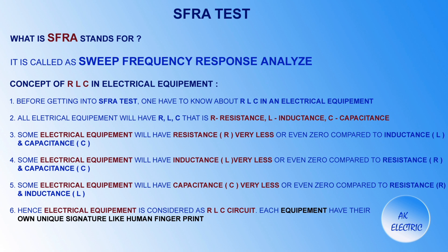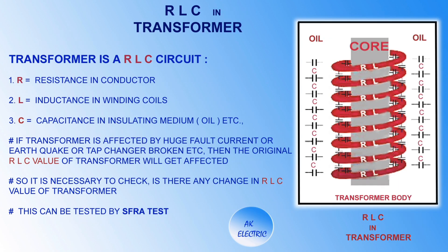Each equipment has its own unique signature, like a human fingerprint. Inside a transformer body, one can observe resistance in the conductor, inductance in the winding coils, and capacitance in the insulating medium — that is, transformer oil. If a transformer is affected by a huge fault current, earthquake, or tap changer breakage, the original RLC values of the transformer will get affected. So it is necessary to check for any change in RLC values, and this can be tested by the SFRA test.